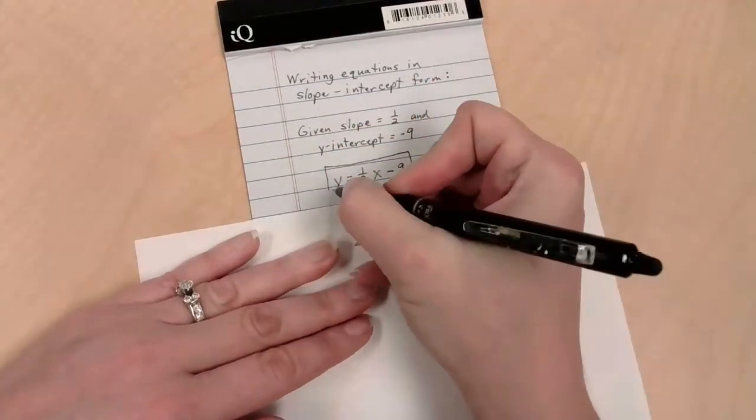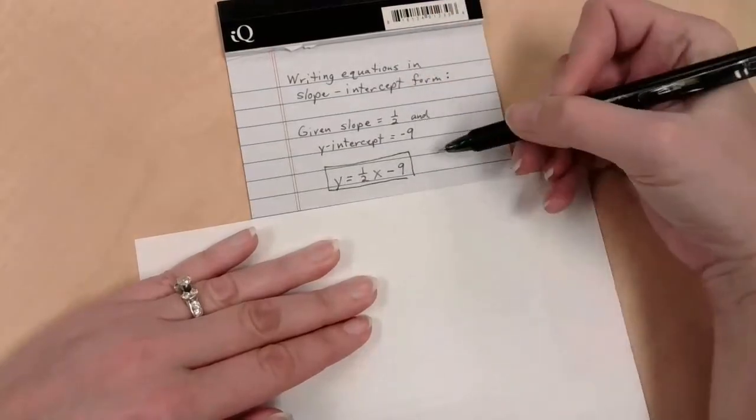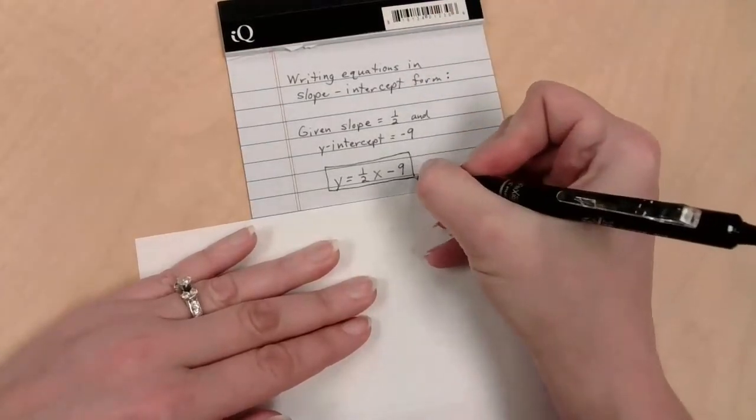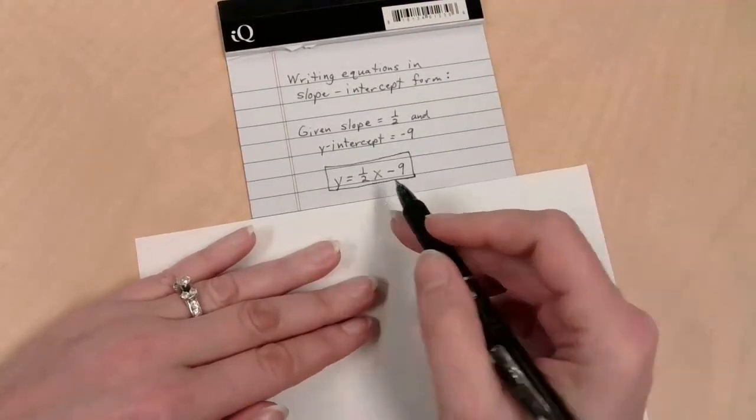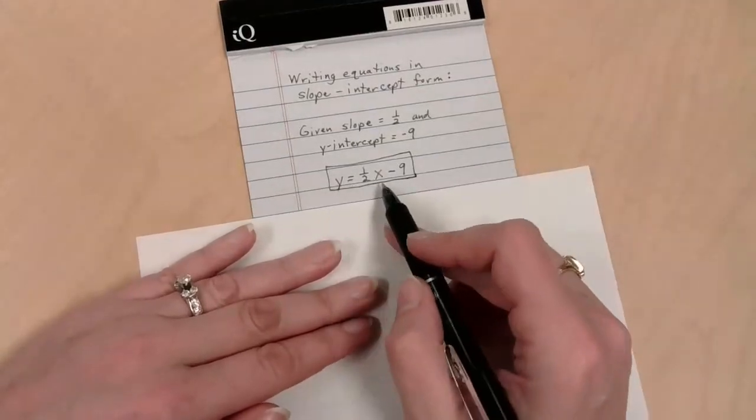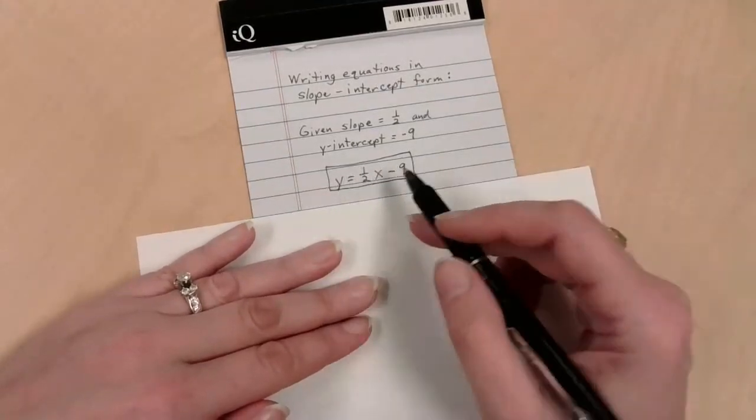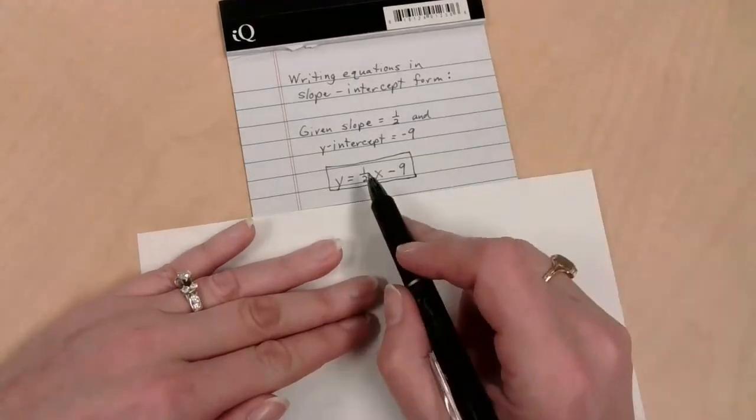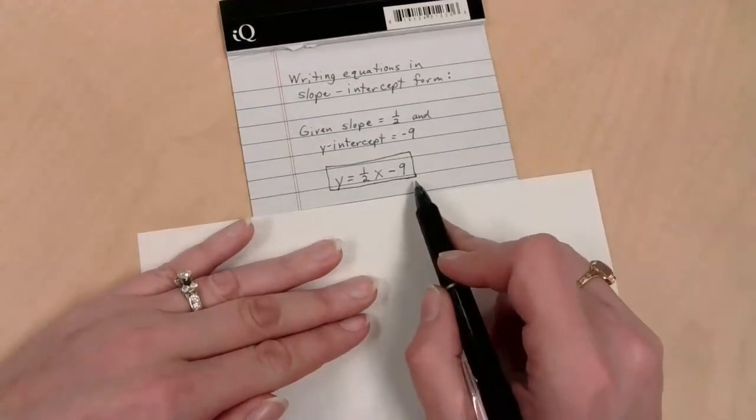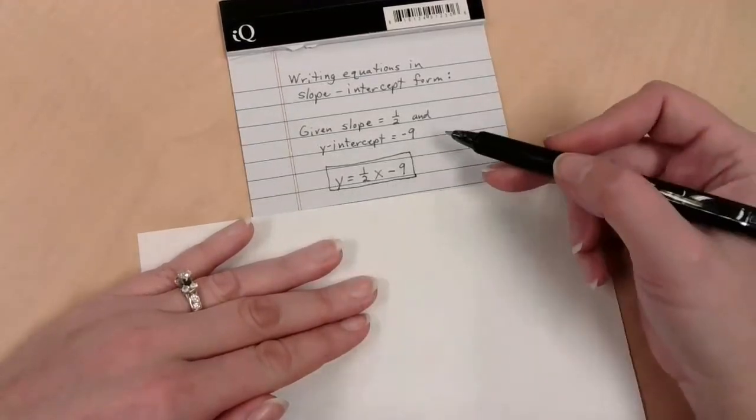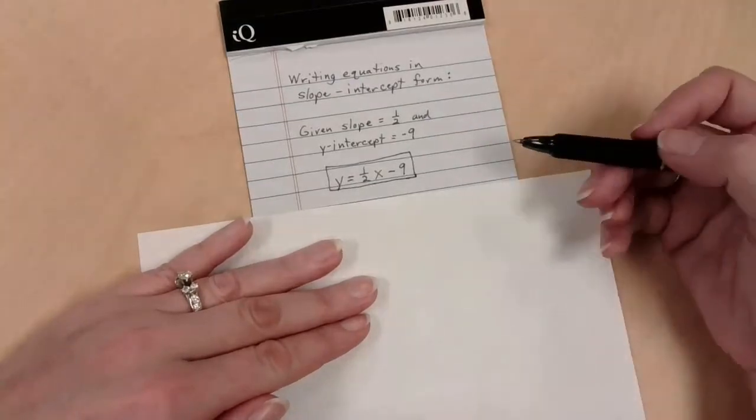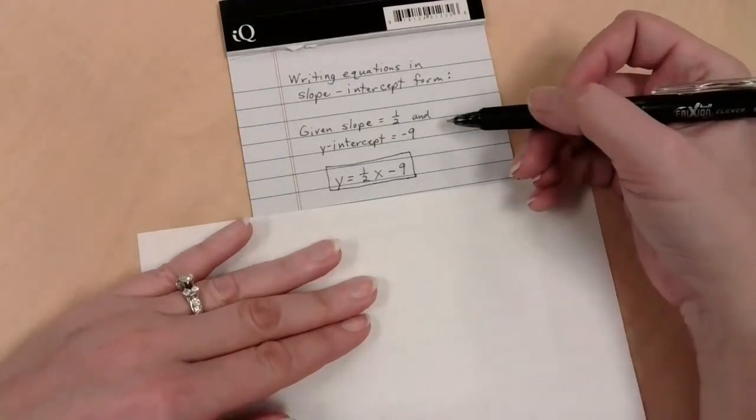Think about y equals mx plus b. So y equals m, what's m? m is slope. What's the slope? 1 half. So y equals mx plus b, so I'm going to add a negative 9. I'm going to write minus 9 there. I'm done. That's it.